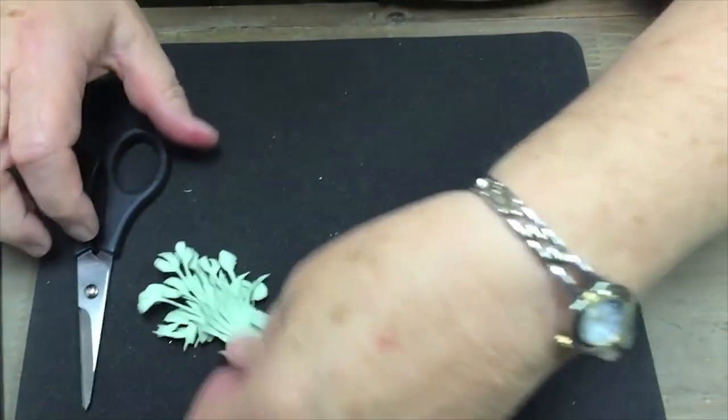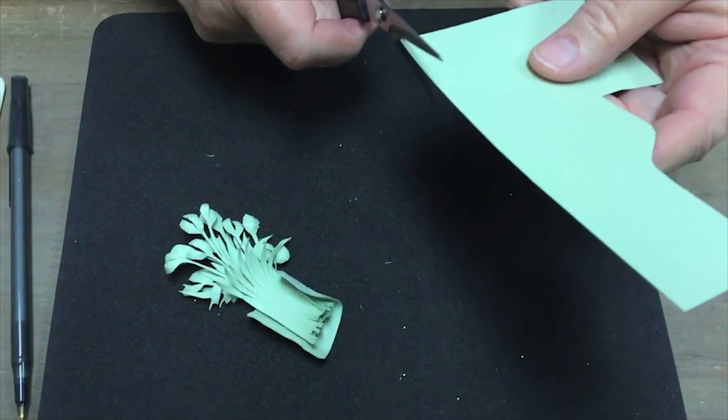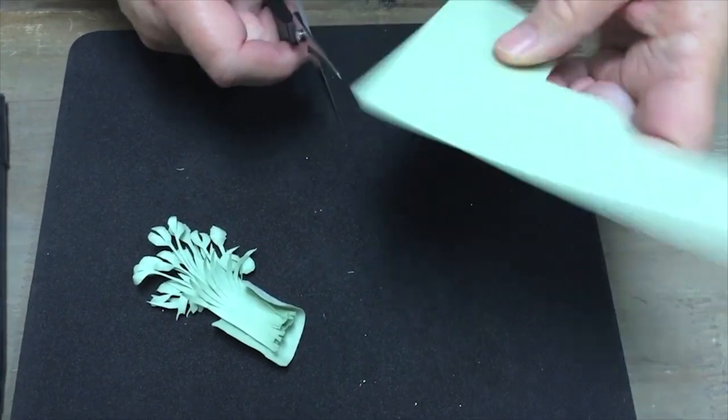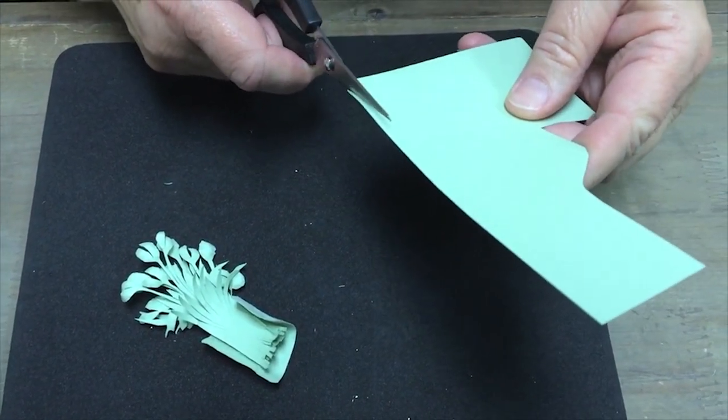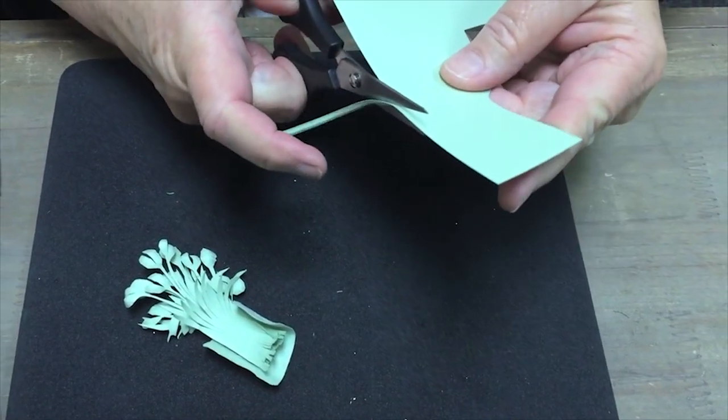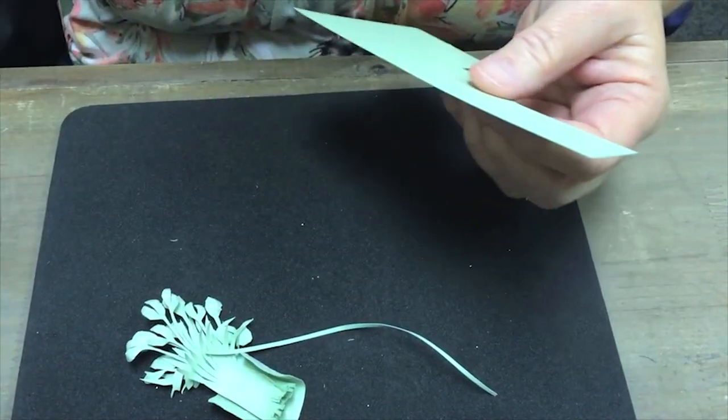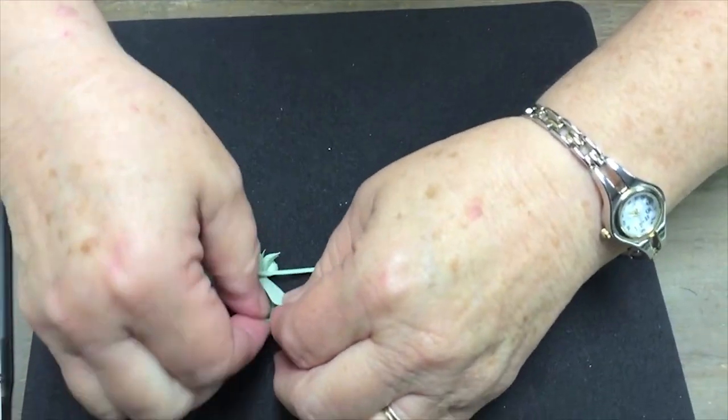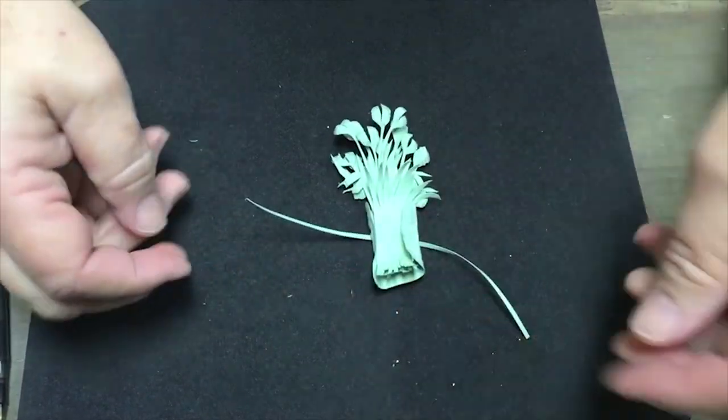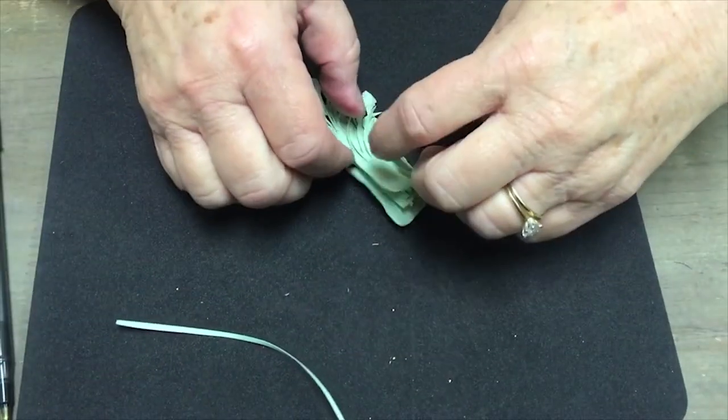Now we need our little string. And to do that, if you cut on a short grain of the paper, it's going to tear easily. So you've got to figure out which way is the long grain. And then just cut about a sixteenth of an inch all the way down. And yes, this will still tear easily, even though I did cut with the grain. But it's long enough to tie and that's what we need. Now we're ready to assemble the whole bouquet.